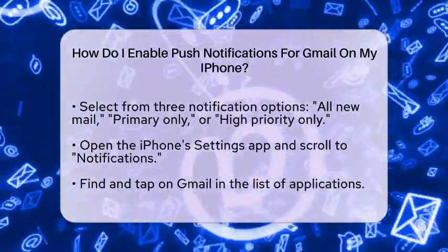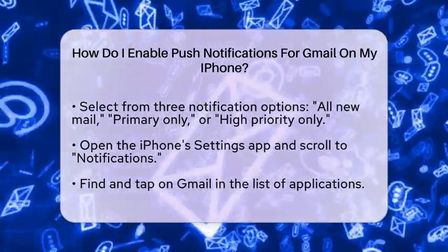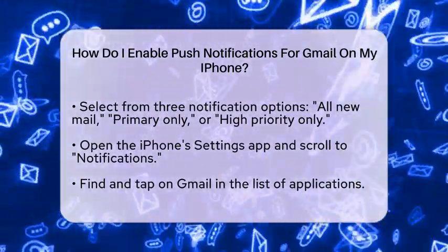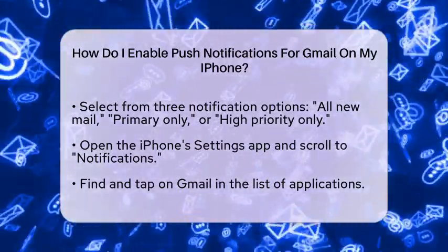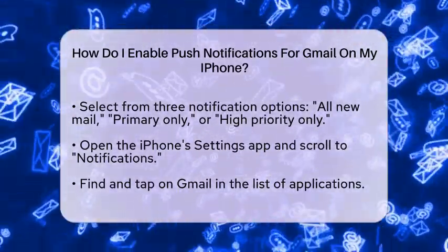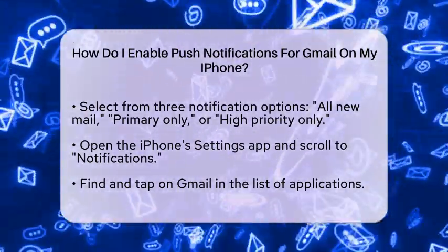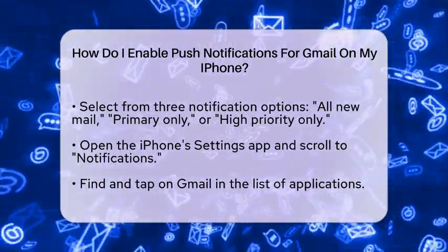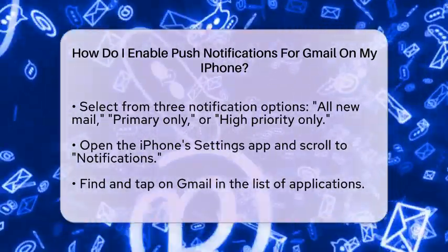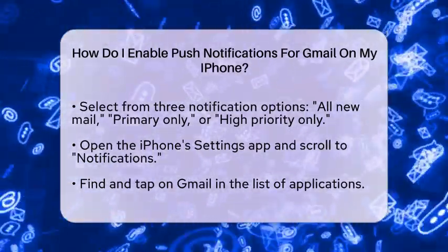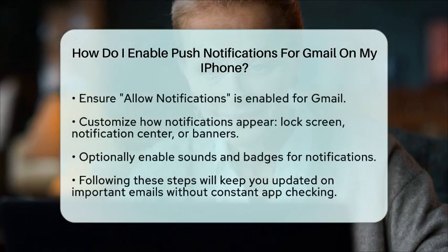Next, let's adjust your iPhone's notification settings to ensure everything is set up correctly. Open the Settings application on your iPhone and scroll down until you see Notifications. Tap on it and then find Gmail in the list of applications. Once you tap on Gmail, make sure that Allow Notifications is turned on. You can also customize how you want the notifications to appear. For instance, you can choose to have them show up on your lock screen, in the notification center, or as banners.